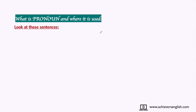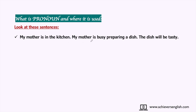Look at the sentences: 'My mother is in the kitchen. My mother is busy preparing a dish. The dish will be tasty.' In the first sentence we introduced 'my mother' — mother is a noun. In the second sentence we are repeating 'my mother' again, and in the third one we are repeating 'the dish.' In place of 'my mother' if we write 'she,' and in place of 'the dish' if we write 'it,' we remove unnecessary repetition of nouns.